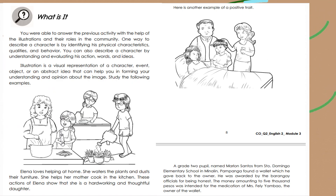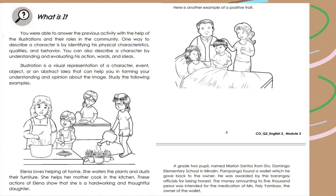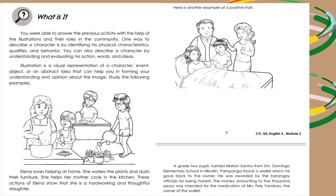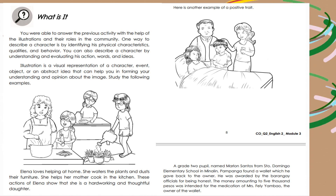For what is it, you were able to answer the previous activity with the help of the illustrations and their roles in the community. One way to describe a character is by identifying his physical characteristics, qualities, and behavior. You can also describe a character by understanding and evaluating his actions, words, and ideas. An illustration is a visual representation of a character, event, object, or an abstract idea that can help you in forming your understanding and opinion about the image. Let us study the following examples.